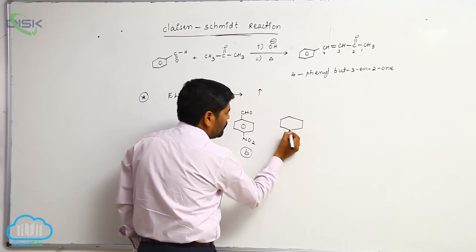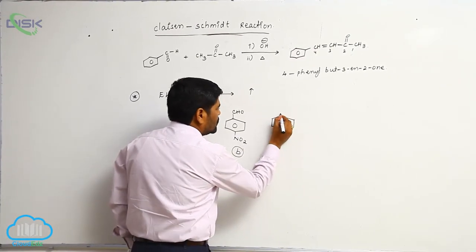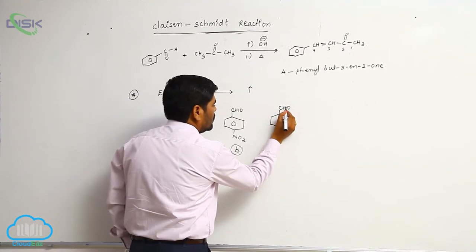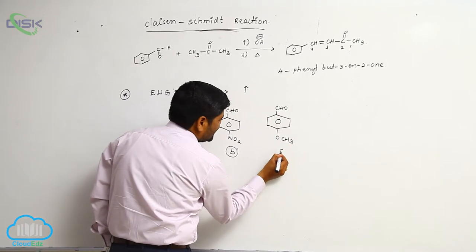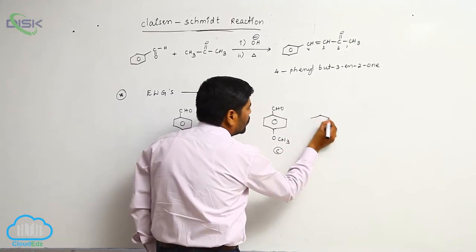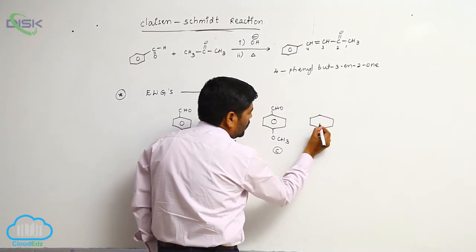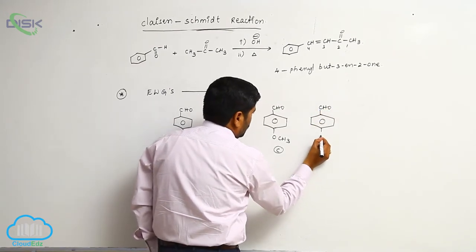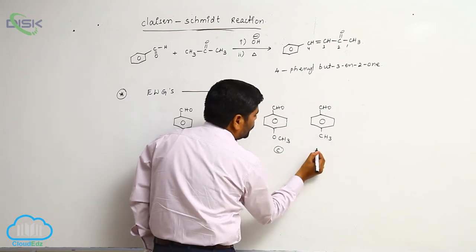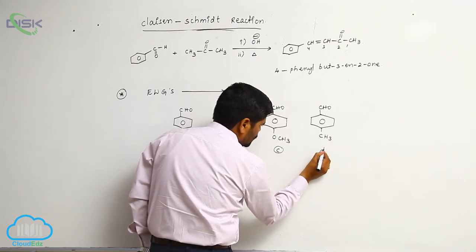Then, aldehyde with OCH3 group, this is C. Last one, aldehyde with methyl group, this is D.